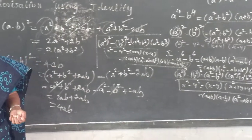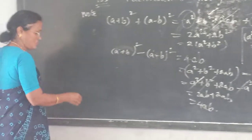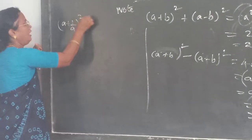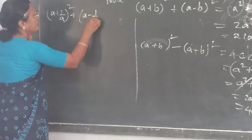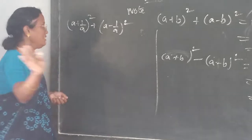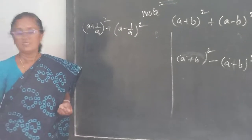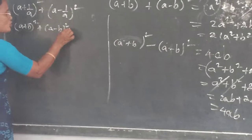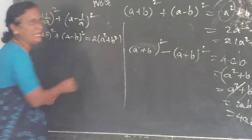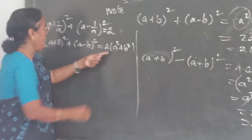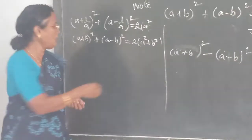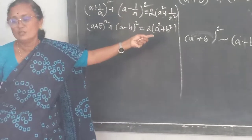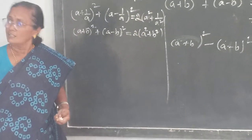They have given in the progress check: (a + 1/a) whole square plus (a - 1/a) whole square = 2(a² + 1/a²). We have already studied this — (a + b)² + (a - b)² = 2(a² + b²). In the place of a we have a, and in the place of b we have 1/a. So the answer is 2(a² + 1/a²). Do you follow?